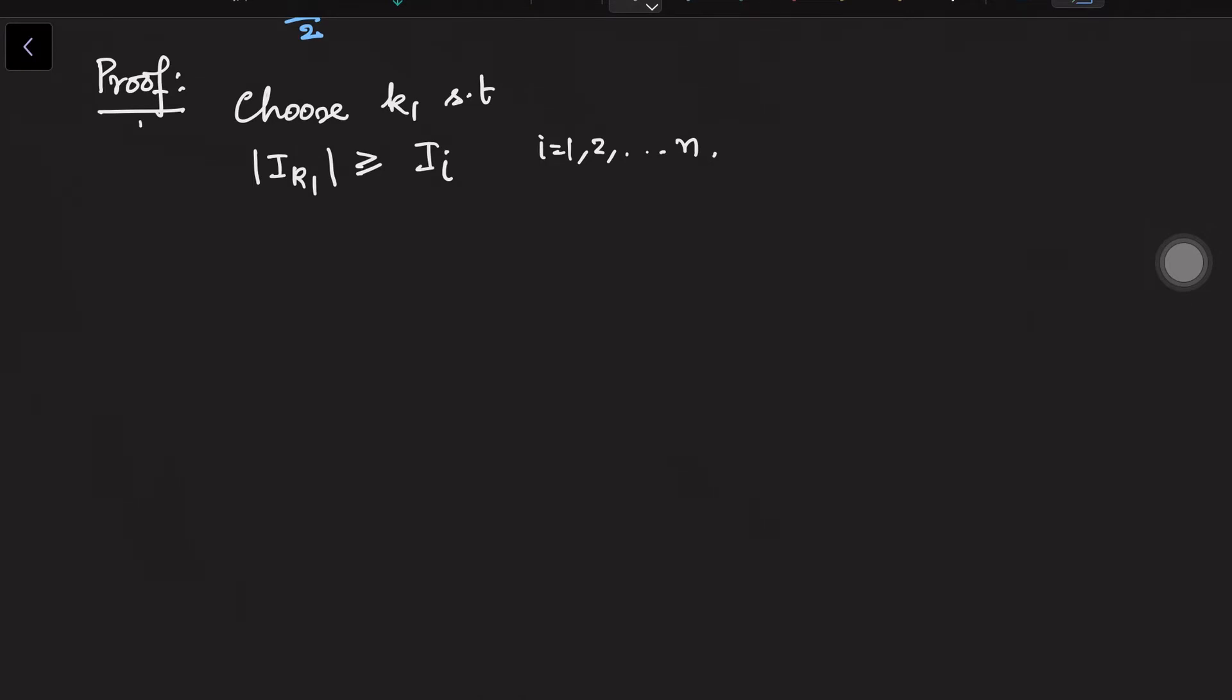Now, once you have chosen this k_1, remove that set and next choose k_2 such that, again you want k_2 to be bigger than or equal to all of this, but this time for all of them and i should be different from the k_1 that we have chosen.